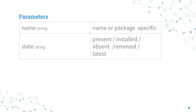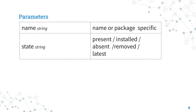The most important parameters are name and state. In the name parameter you specify the name of the package or the specific version you would like to install. The state specifies the action we would like to perform — in our case, install is present or installed.